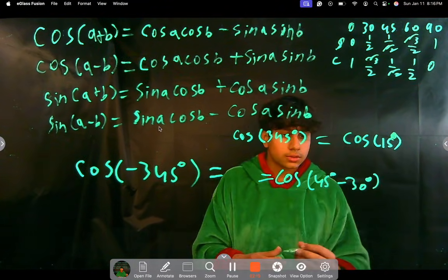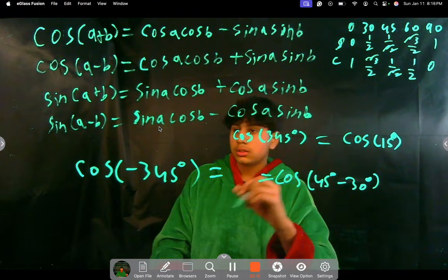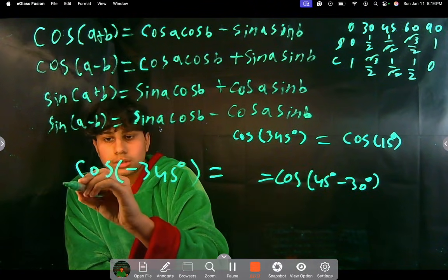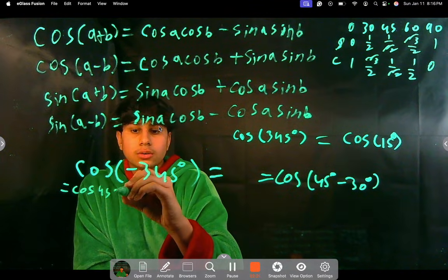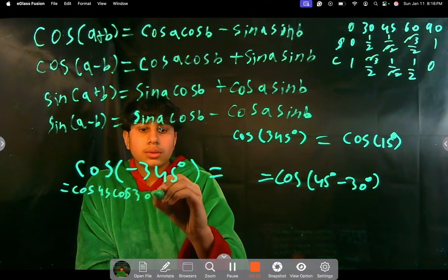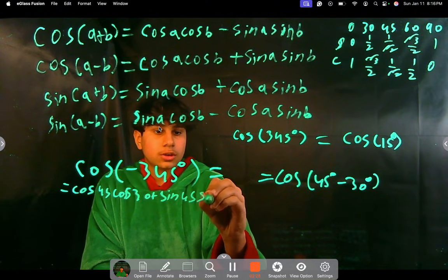So now we just apply our difference formula. So it equals cosine of 45 cosine of 30 plus sine 45 sine 30.